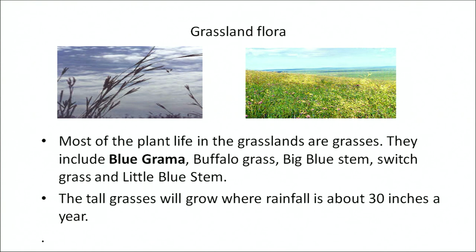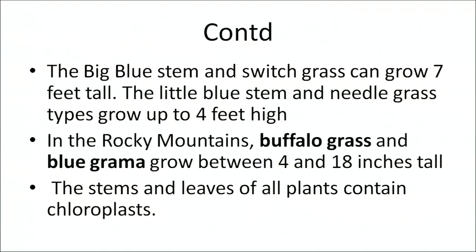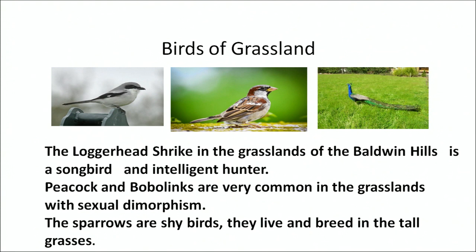Most plant life in grasslands consists of grasses including blue grama, buffalo grass, big blue stem, switch grasses and little blue stem. Tall grasses grow where rainfall is about 30 inches a year; big blue stem and switch grass can grow up to 7 feet tall. Little blue stem and needle grass grow up to 4 feet high. In the Rocky Mountains, buffalo grass and blue grama grass are between 4 to 18 inches tall. The stem and leaves of the plants contain chloroplasts for photosynthesis. Common birds found in the grasslands include the loggerhead shrike, a songbird and intelligent hunter. Peacocks and boblinks are common in grasslands with sexual dimorphism. Sparrows are shy birds that live and breed on tall grasses.